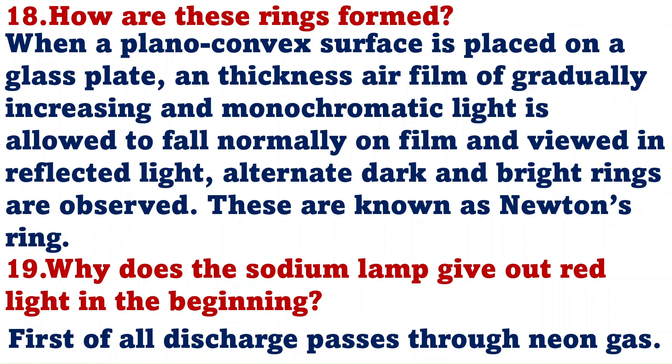How are these rings formed? Generally, when a plano-convex lens surface is placed on the glass plate, thickness of air film is formed and it gradually increases. Monochromatic light is allowed to fall normally on it. When it is viewed in reflected light, alternate dark and bright rings are observed due to interference. These are known as Newton rings.